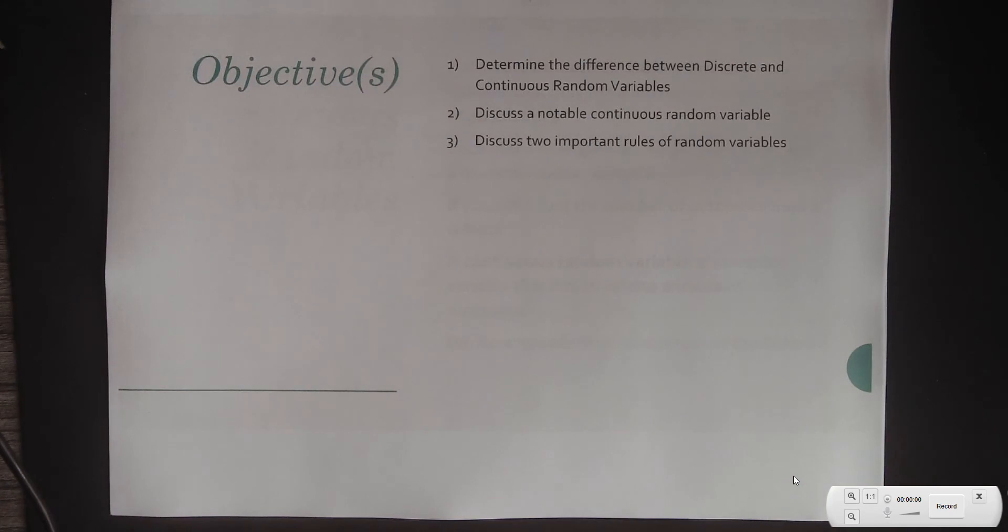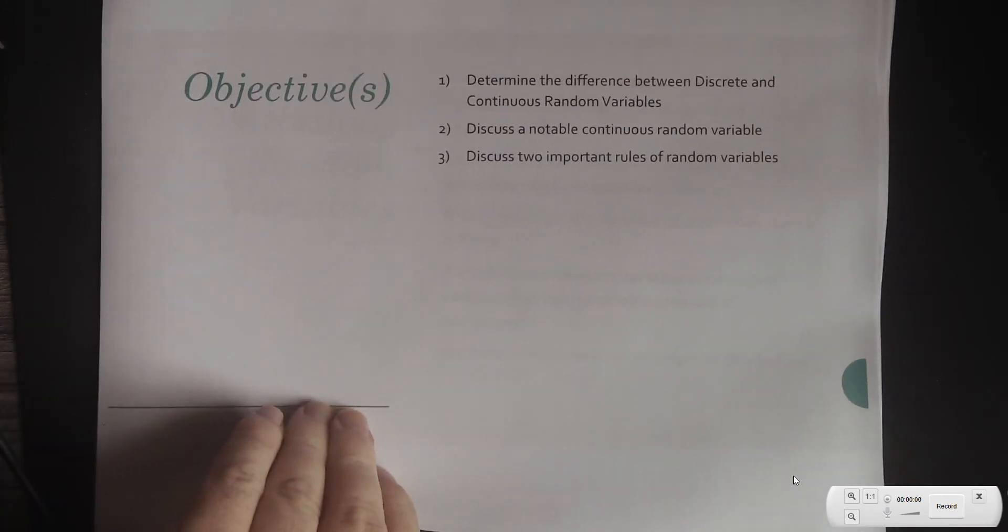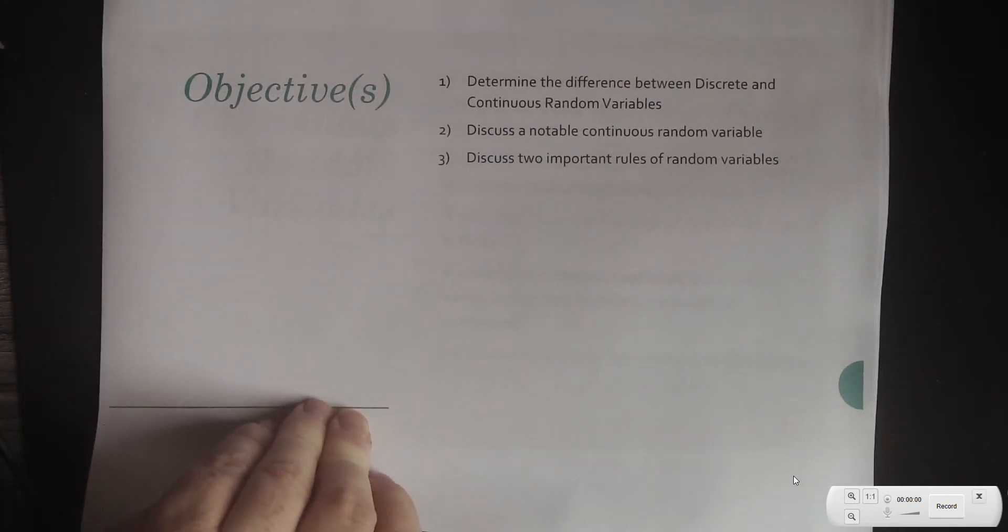We're going to determine the difference between discrete and continuous random variables, discuss a notable continuous random variable that we've already talked about, and then discuss two important rules of random variables that we did not talk about last time.